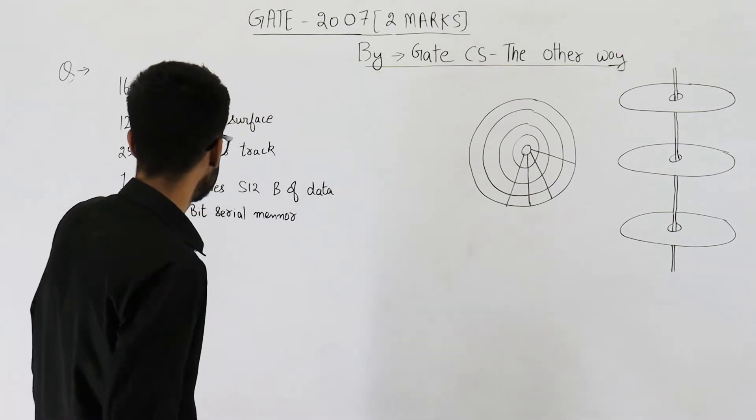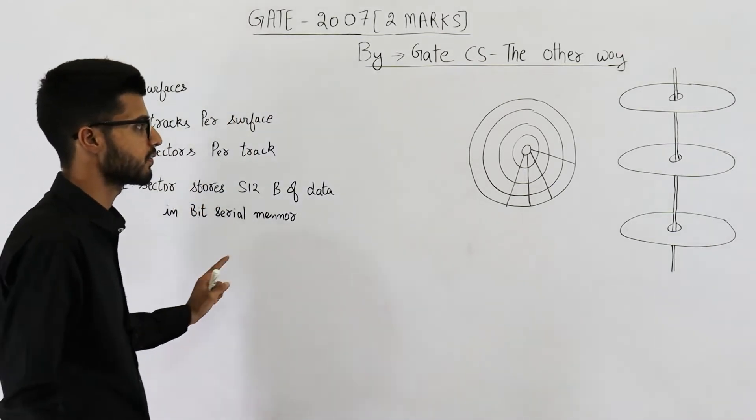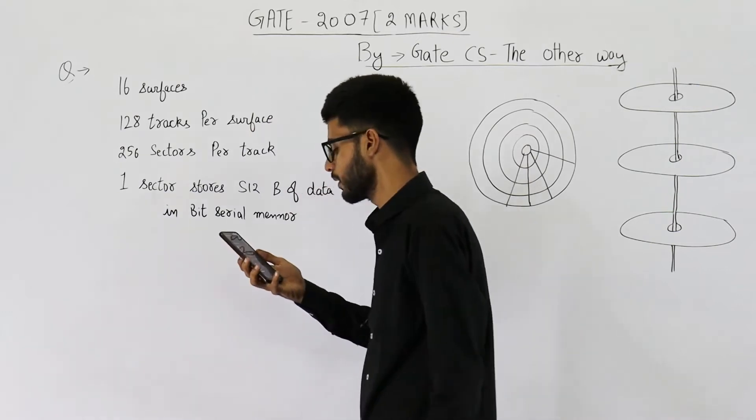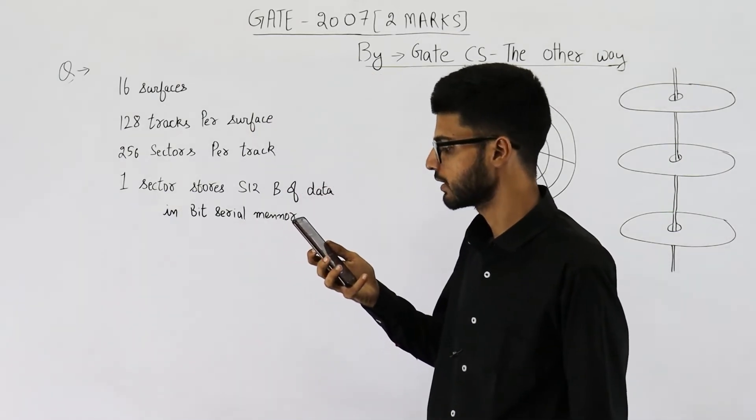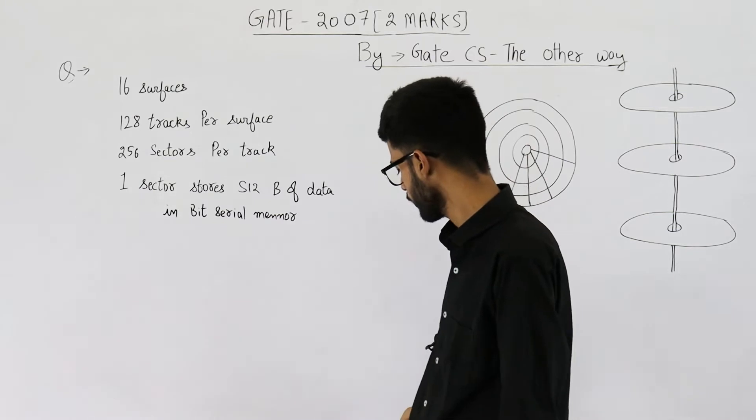So we need to find out the capacity of the disk with these specifications and the number of bits to specify one sector.